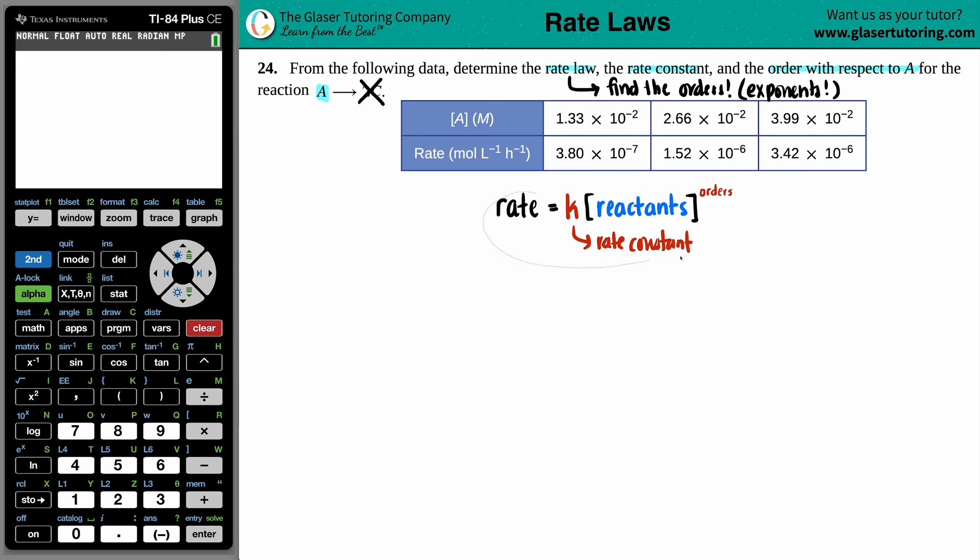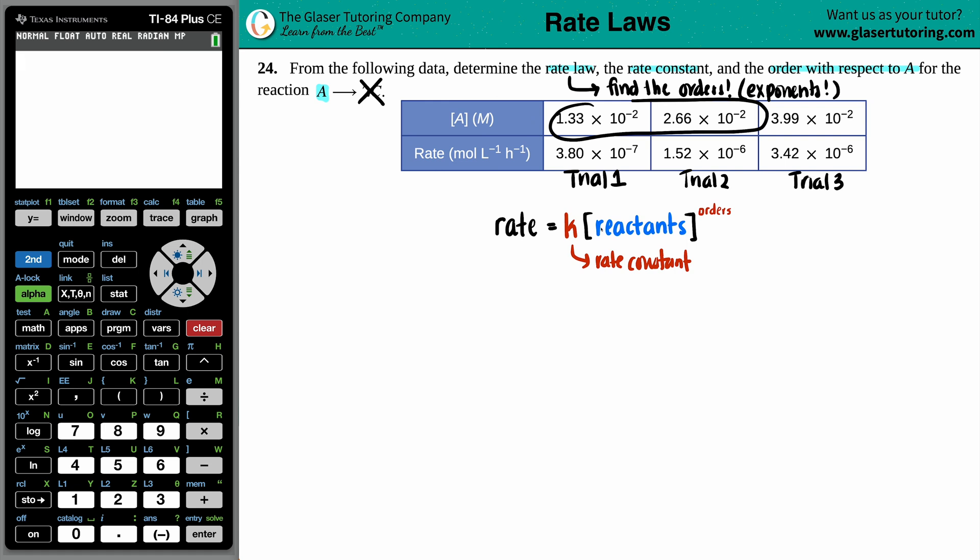Now, let's just call these trial numbers. So let's say that the first one is trial one, the second one is trial two, and the third one is trial three. You could call them experiments, so experiment one, experiment two, experiment three. It doesn't really matter. But we have to make a relationship between one trial to another. Because then, if we know what's going on with the change in the concentration, we could find out the change in respect to the rate.